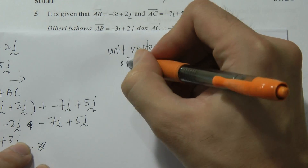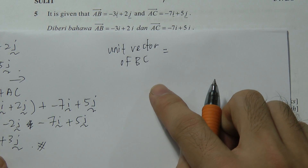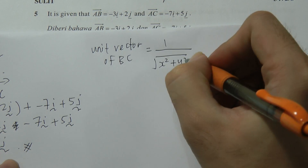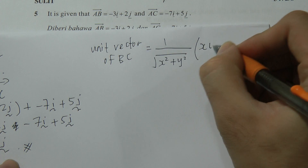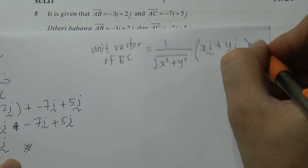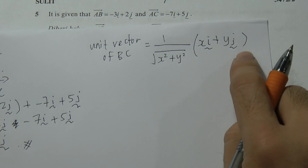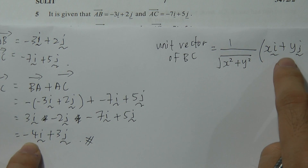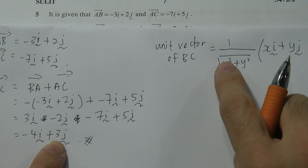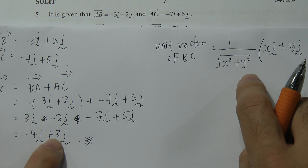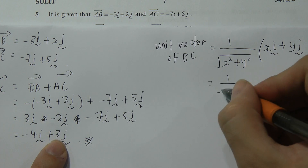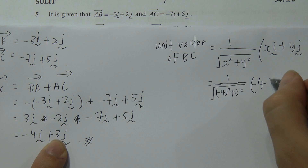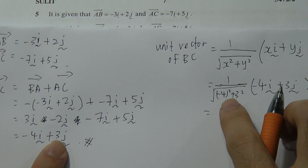For the second part, we need to find the unit vector in the direction of BC. The formula for unit vector is: one over the square root of (x² + y²), multiplied by (xi + yj). Here, x equals negative 4 and y equals 3, so we compute one over the square root of (negative 4 squared plus 3 squared).